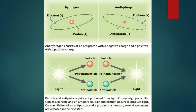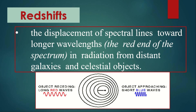This illustration shows us the process of annihilation — the particle and antiparticle pairs are produced from light, and conversely, upon collision of a particle and an antiparticle, annihilation occurs to produce light, which is energy.